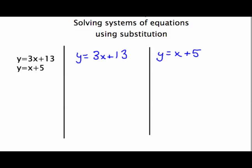Now if we look at the first equation, y equals 3x plus 13, it means that y is the same as 3 times x plus 13. Thus what we could do is take this 3 times x plus 13 and substitute it in for y in our other equation. This would give us the equation 3x plus 13 equals x plus 5.